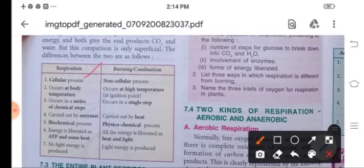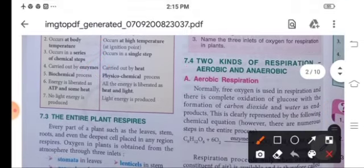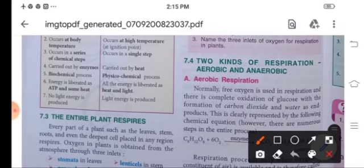Respiration is a cellular process, whereas burning is a non-cellular process. It occurs at body temperature and burning occurs at high temperature. Now respiration requires a series of chemical steps, whereas burning occurs in a single step. It is carried out with the help of enzymes, whereas burning is carried out by heat. Respiration is a biochemical process, whereas burning is a physico-chemical process. Now energy is liberated in the form of ATP in respiration, whereas all the energy is produced in the form of heat and light. So no light energy is produced in respiration, whereas in burning, light energy is produced.